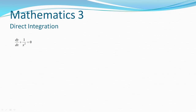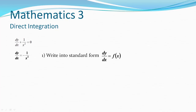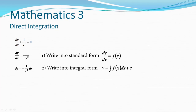Let's go through the steps again. Step one: start with the non-standard form and rewrite it to standard form, with dy over dx on the left and the function of x on the right. Step two: rewrite it so the standard integral can be applied, with dy on the left and the function of x in terms of dx on the right. Step three: solve for y by introducing the integral to the function of x. Step four: solve the integral using the standard integral to get y equals one over x plus c.